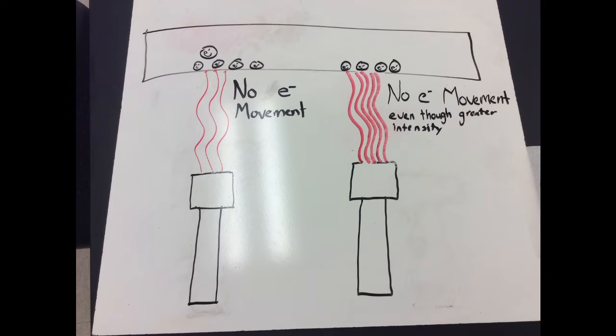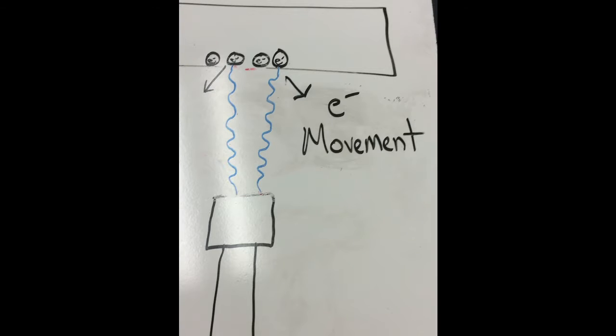we get no current with red light, low frequency light, even when we make it very bright, high amplitude. However, low amplitude blue light, high frequency, gets electrons to move.